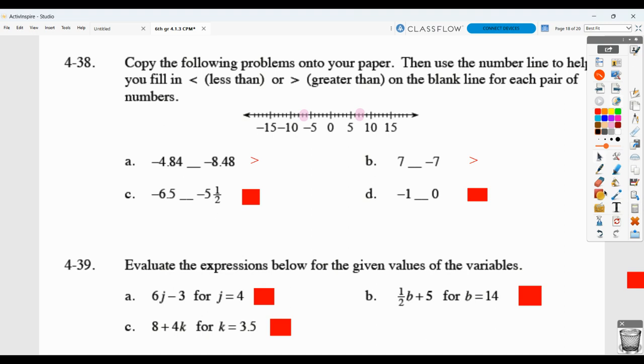Here we have negative 6 and 5 tenths, which is about here, compared to negative 5 and 1 half, which is about here. So what we find is negative 6 and 5 tenths is actually less than. And here, negative 1 compared to 0, negative 1 is less than 0.